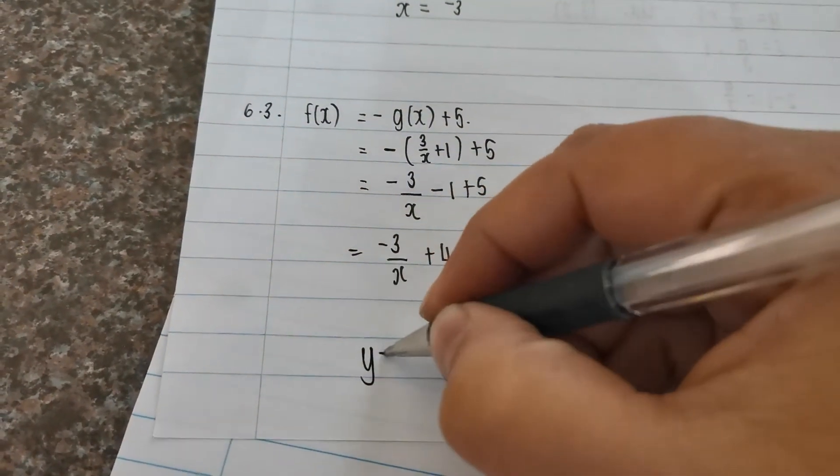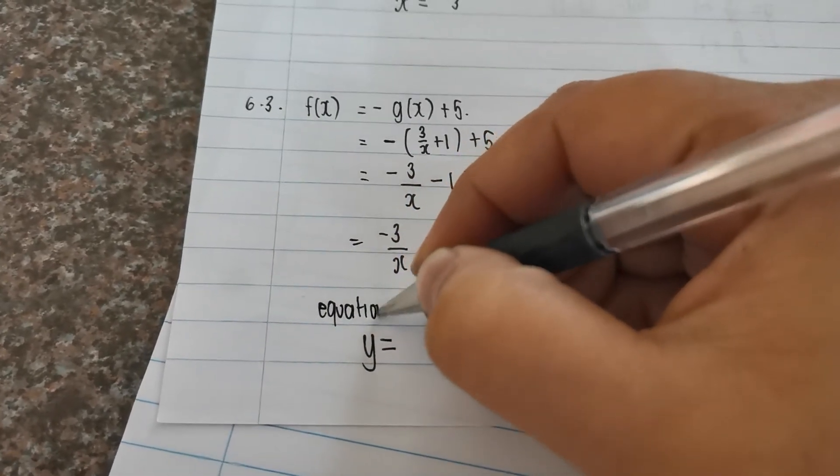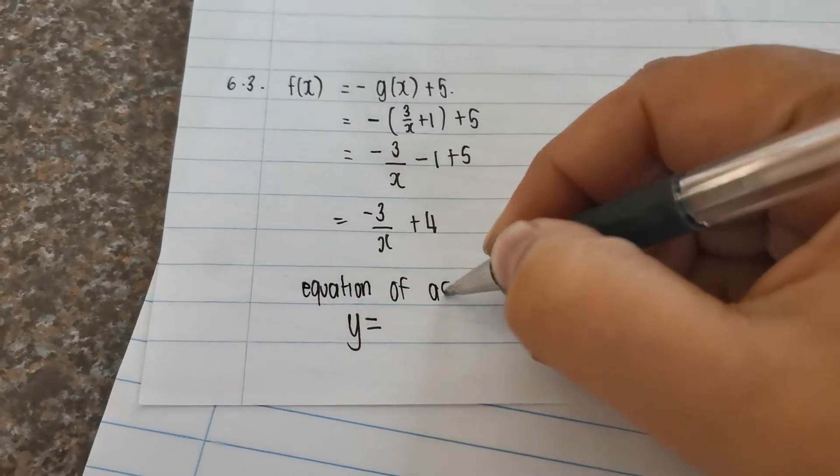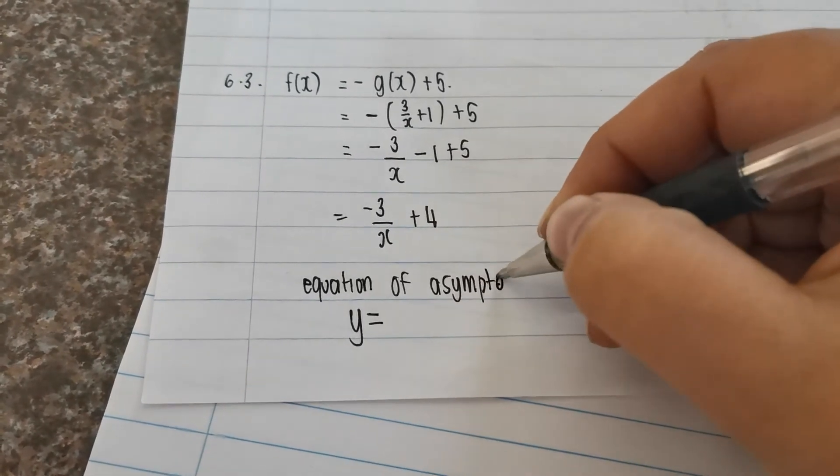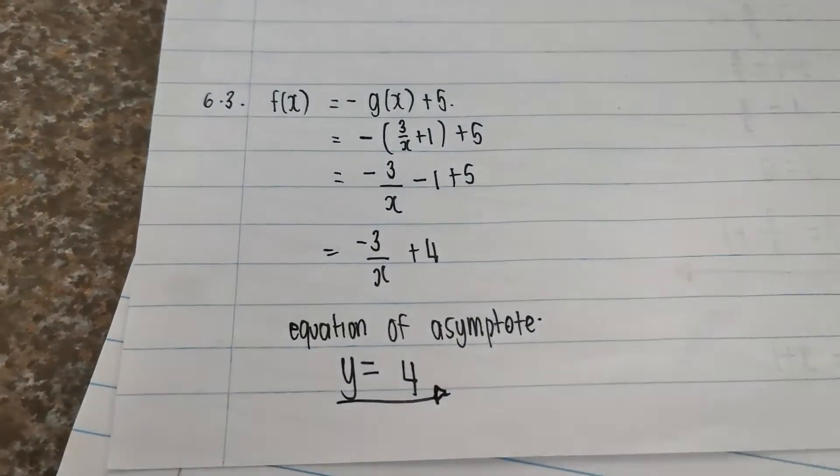The equation of the asymptote is y equals, let's write this down, equation of asymptote: y equals 4, and that's our answer.